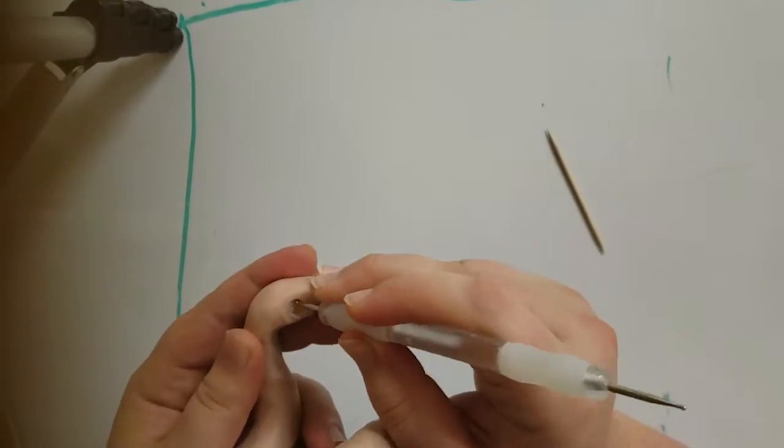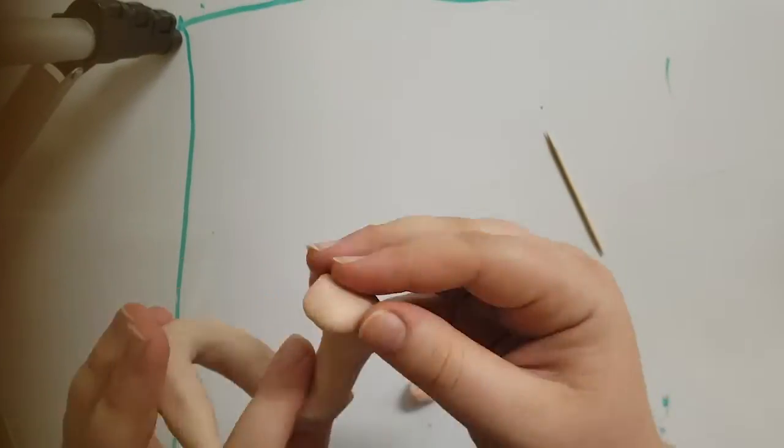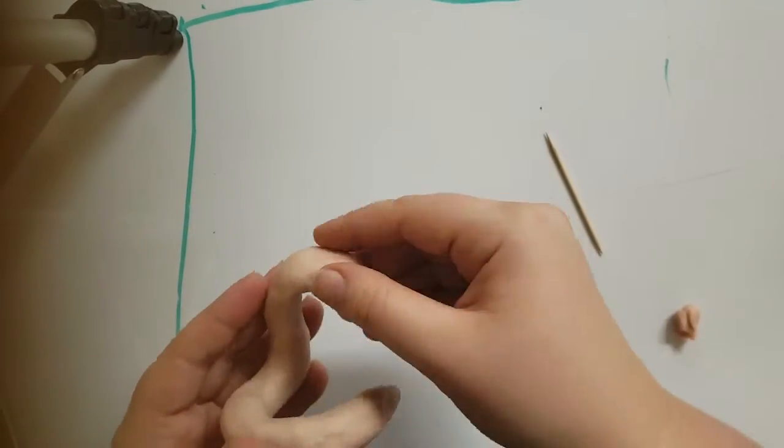Make eye sockets using the pick. Roll two small balls of clay. They should be small enough to fit in the eye sockets. From there, add even smaller balls of clay on top if you want pupils.